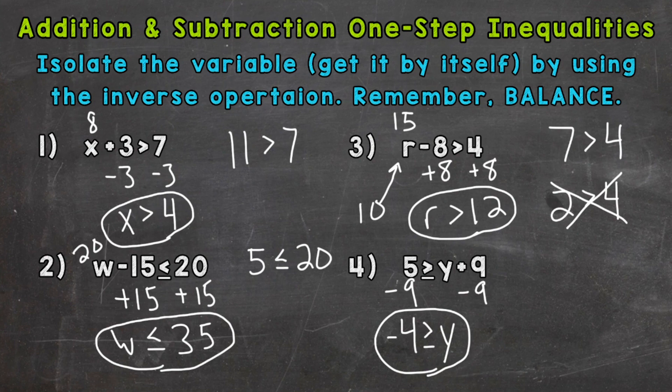So in other words, y has to be less than or equal to negative 4. Let's try a solution here, something less than negative 4. And we'll try negative 5. So let's plug in negative 5 for y. Negative 5 plus 9 is 4. So 5 is greater than or equal to 4. That would be true. So negative 5 is a solution, as well as anything less than or equal to negative 4.